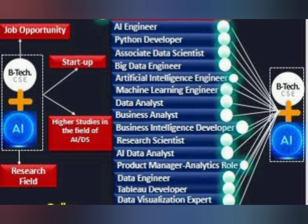Jobs have been created for AI engineer, Python developer, artificial intelligence engineer, machine learning engineer, data analyst based on data sciences, AI data analyst combining AI and data sciences, data engineer, web developer based on data science, data visualization expert, research scientist based on AI and ML, and business intelligence developer based on AI and ML. These jobs are available to both specialization students and core computer science students who gain sufficient knowledge.